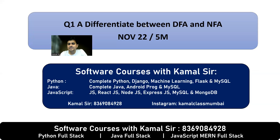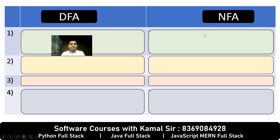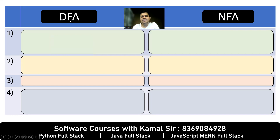Hello everybody, this is Kamal sir and in this video we will talk about question 1a from November 22 paper, 5 marks. The question is: differentiate between DFA and NFA. Let's make a table and try to understand the differences. DFA stands for Deterministic Finite Automata, and NFA stands for Non-Deterministic Finite Automata.